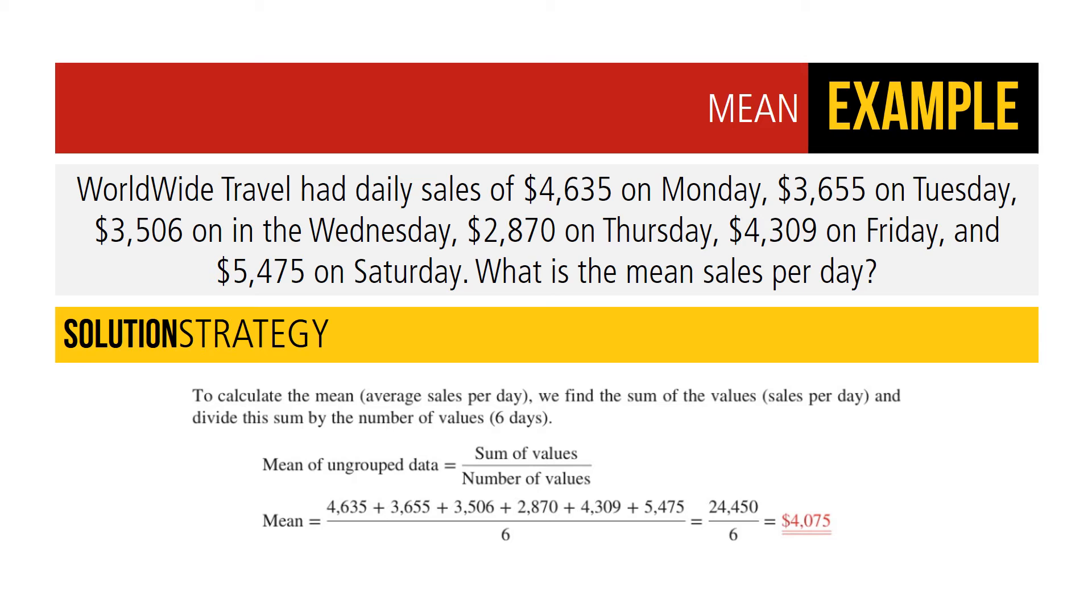WorldWide Travel had daily sales of $4,635 on Monday, $3,655 on Tuesday, $3,506 on Wednesday, $2,870 on Thursday, $4,309 on Friday, and $5,475 on Saturday. What is the mean sales per day?